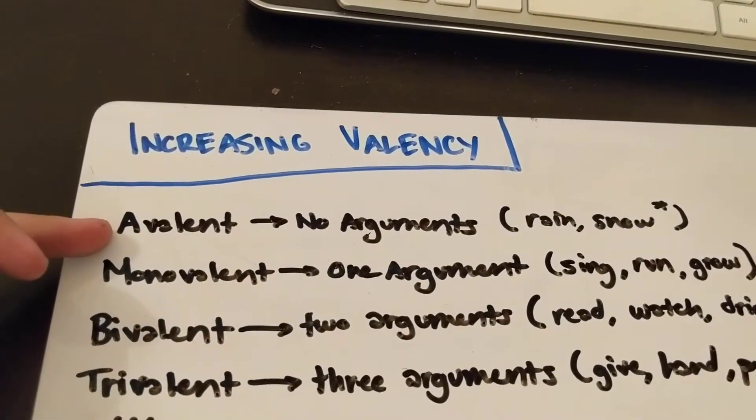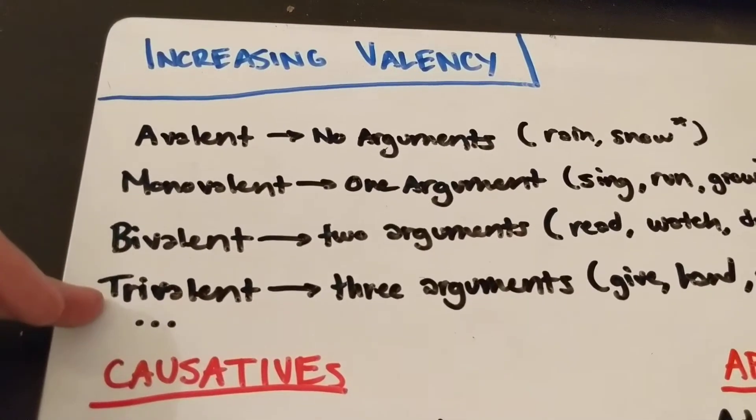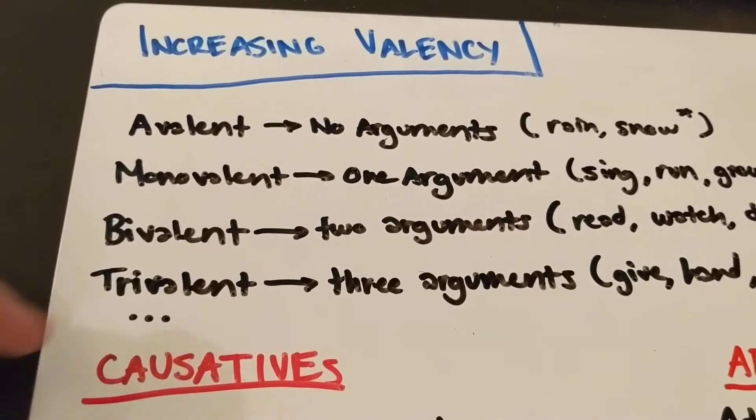So an avalent verb has no arguments, a monovalent verb has one argument, a bivalent verb has two arguments, and a trivalent verb has three arguments.